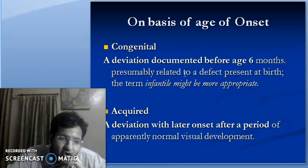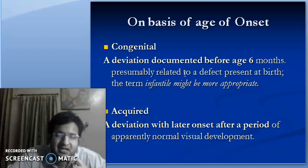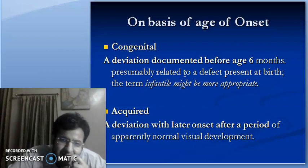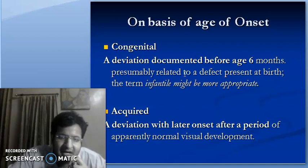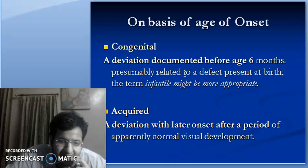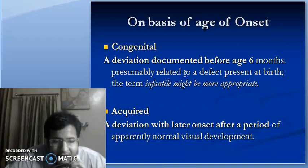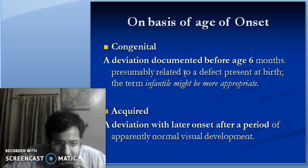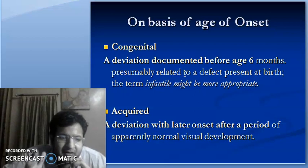On the basis of onset, strabismus can be classified into congenital and acquired. Congenital strabismus is when the deviation is documented before the age of 6 months, related to a defect present at birth; the more appropriate term is infantile strabismus. Acquired strabismus has a later onset — after a period of normal visual development.